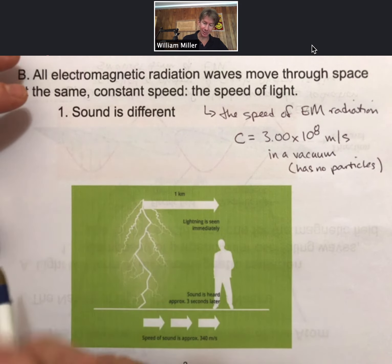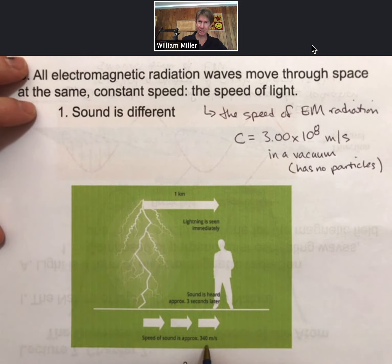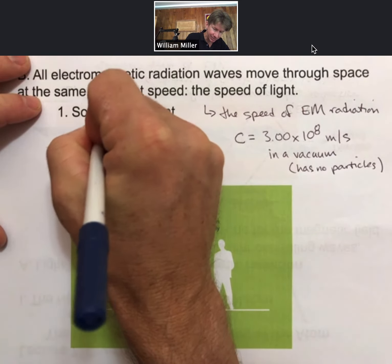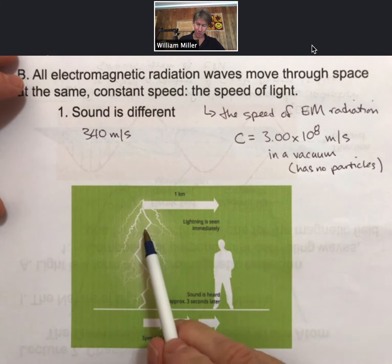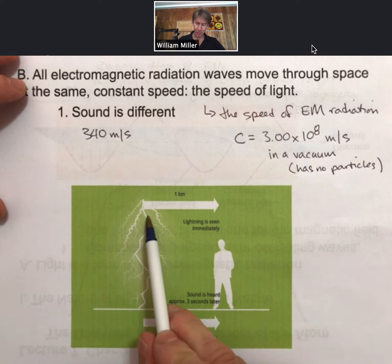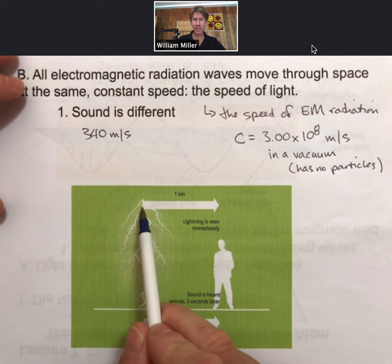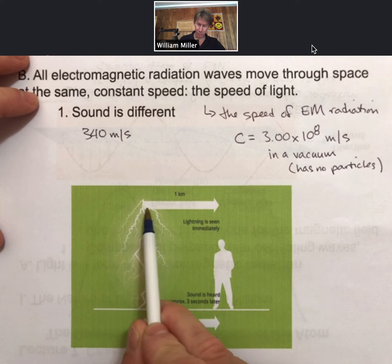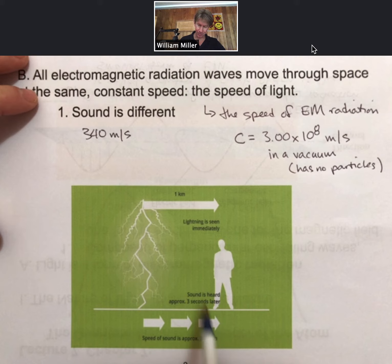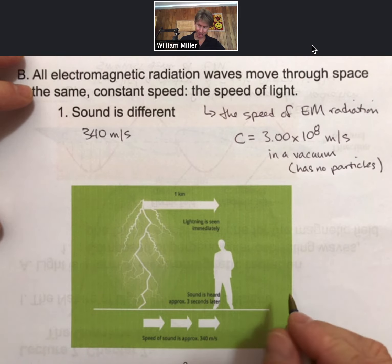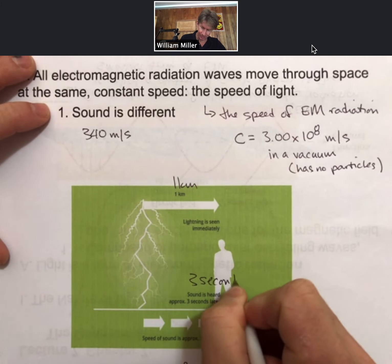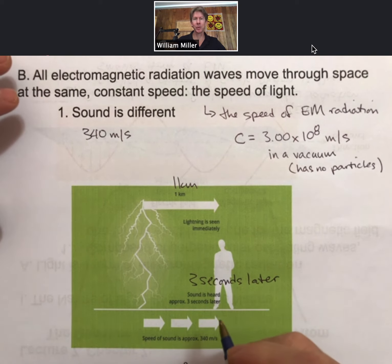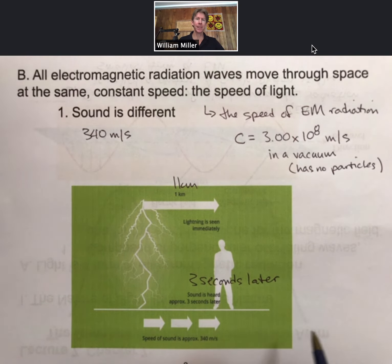Sound is different. The speed of sound is approximately 340 meters per second. That gives rise to what happens when there's lightning — the lightning occurs at the same place as the thunder, but we see the lightning much faster than we hear the thunder. If the lightning is one kilometer away, the sound of the thunder is heard approximately three seconds later. So if you want to know how far away the lightning is, that's a good rule of thumb.